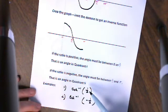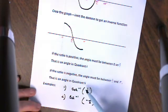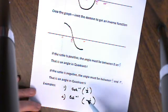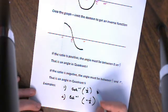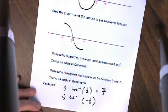In the first example of the inverse cosine, I have a positive ratio. All I'm doing is thinking: what angle for cosine produces the ratio positive 1/2? It's a 60 degree angle — I get that from my chart. But I'm not going to say 60 degrees; I'm going to say the radian equivalent of 60 degrees, which is pi over 3.